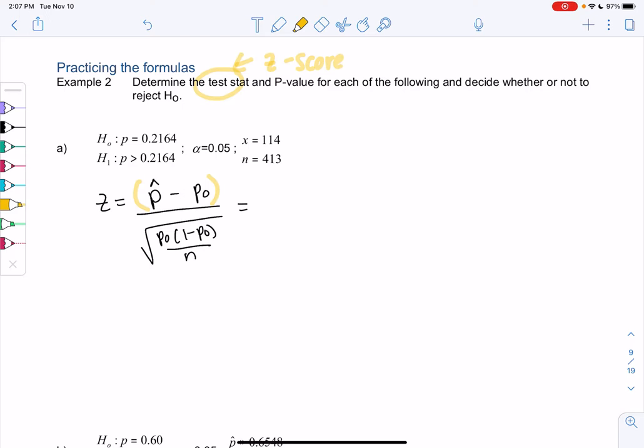So we have a hypothesis where p equals 0.2164, and our H1, we want to prove that p is greater than 0.2164. So that'll be p-zero. Our alpha is 0.05, so that's our cutoff. And then our x, that would be our number of successes, is 114, and n is the total at 413. So p-hat would just be 114 out of 413. I went ahead and divided, and I got 0.2760. So it's a bit bigger than the 21. So 26% compared to 21%.